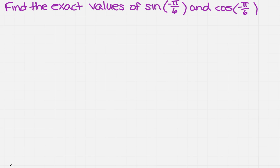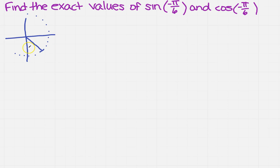Negative pi over 6 is negative 30 degrees. When I draw that, I know that negative 30 is going to be down here in quadrant 4. There's that little imaginary circle we've got going on, and I'm going to draw a right triangle. I know that this point is going to be the square root of 3, negative 1.